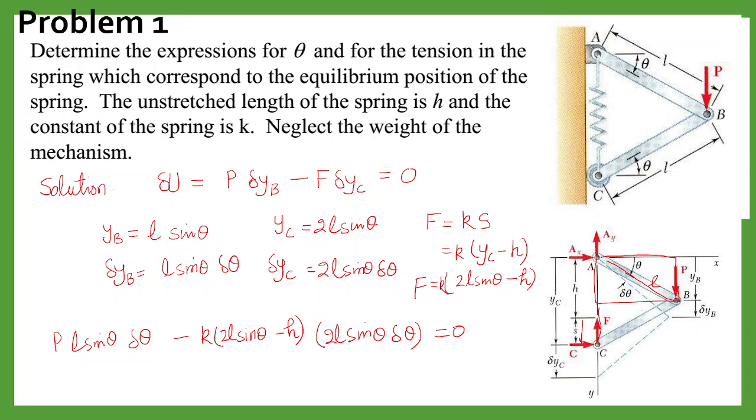When you simplify this, then you will get sin theta is equal to (P plus 2Kh) divided by 4KL, and F equal to half of P.